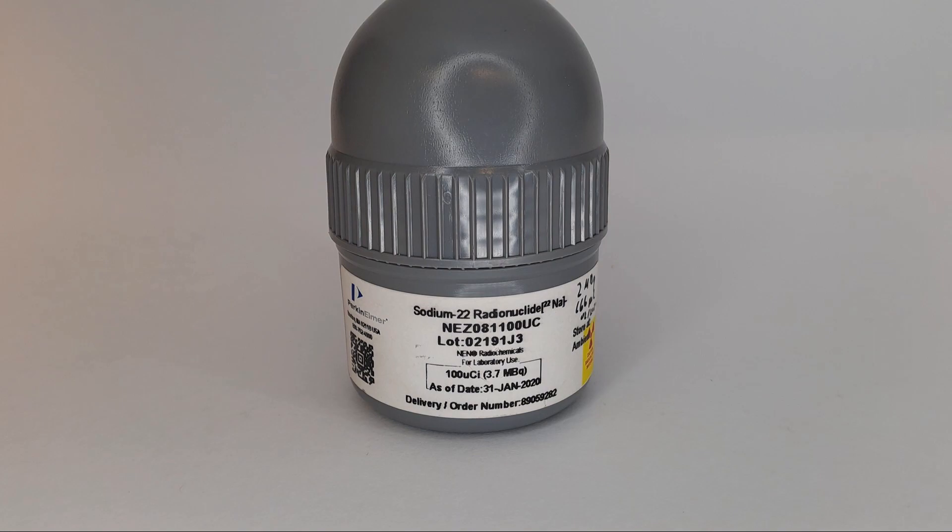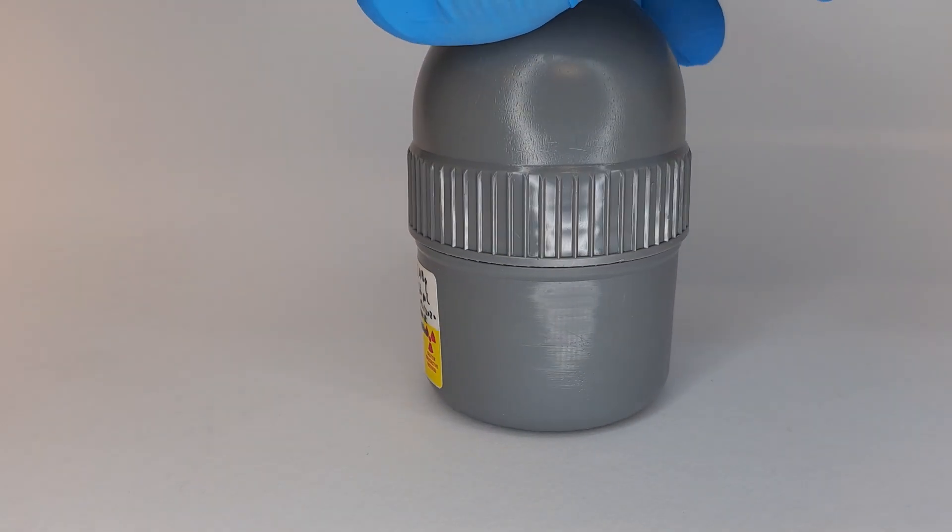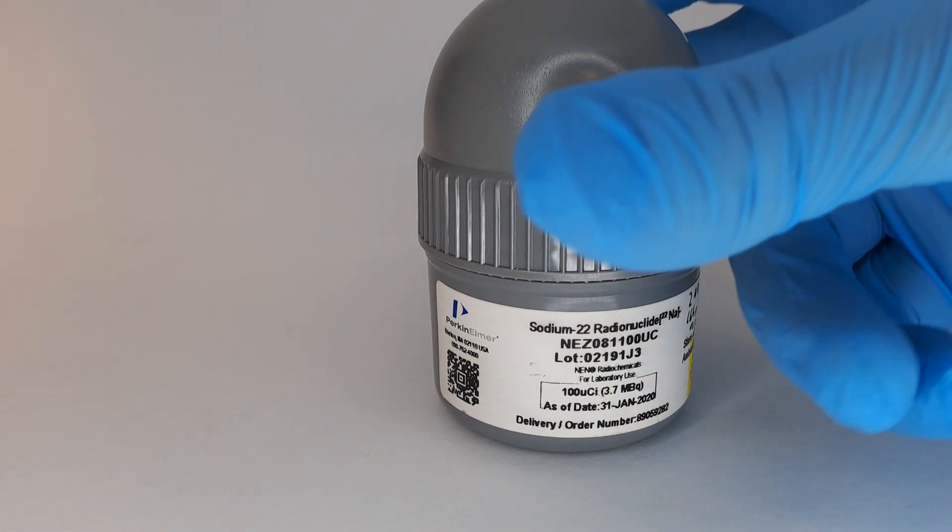For historical reasons, radionuclides are still measured in Curie activities. In February 2020, the activity was as high as 2 megabecquerels, which is extremely high. That's why it's stored in this lead container to at least shield some of the radiation.